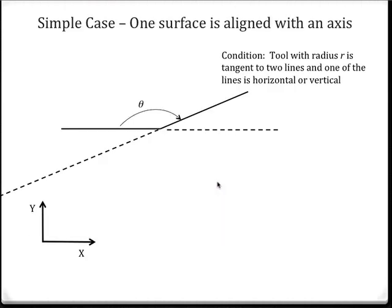Now that's a very simple case. What happens when one of the surfaces is not oriented with respect to the axis? Here we see a case where we've got a surface that is parallel to the x axis, but then the other surface is at an angle — some unknown angle theta — that we would determine from the design specification. The same principle holds in that one of the lines will be oriented with respect to the axis; we have to be tangent to that, so we have the extension line here, and we also have an extension line for the surface that is at an angle of theta with respect to the previous surface.